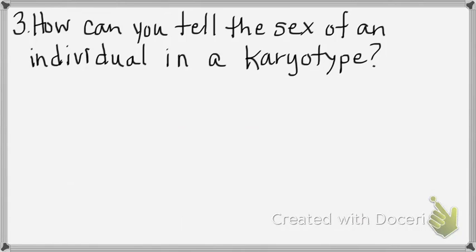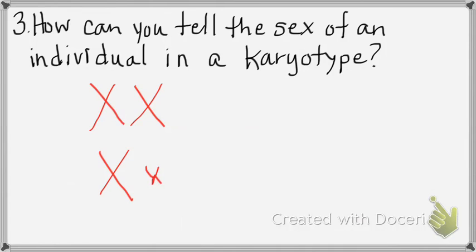How can you tell the sex of an individual on a karyotype? You look at the last pair on the lower right-hand side. If you see two big chromosomes, that's a girl. If you see one big and one really small chromosome, that's a boy — because the small one is the Y chromosome. It's not shaped like a Y; it's shaped like an X but is really small. So this would be female, and this would be male.